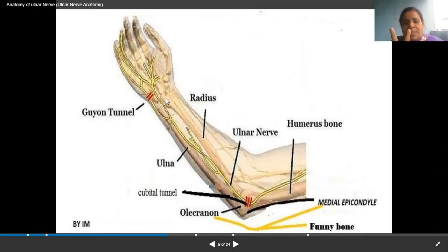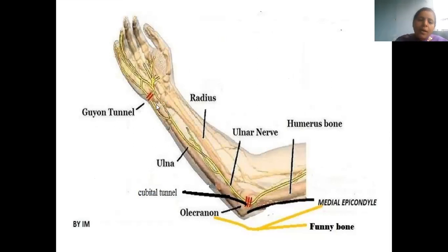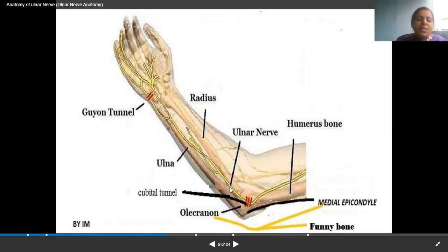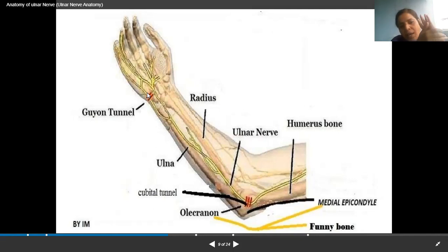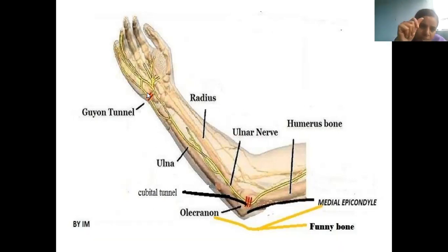Once entering the forearm, the ulnar nerve supplies only two muscles: flexor digitorum profundus and flexor carpi ulnaris — and only the medial half of flexor digitorum profundus. All other muscles of the forearm are supplied by the median nerve. The basic distribution of the ulnar nerve is in the palm, supplying the chief muscles there. Hence it is called the musician's nerve.